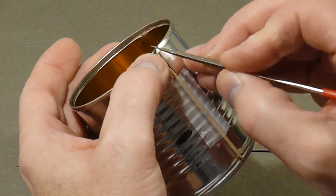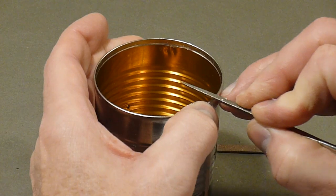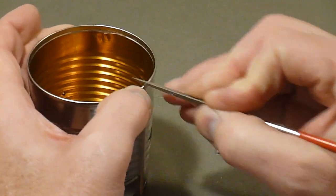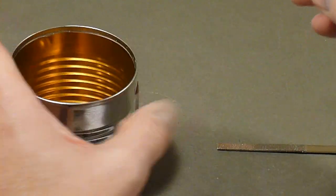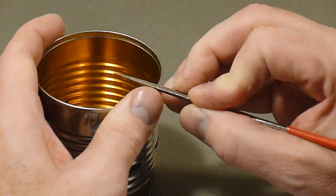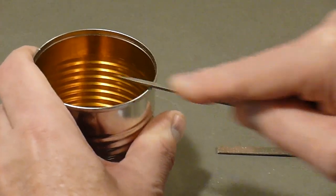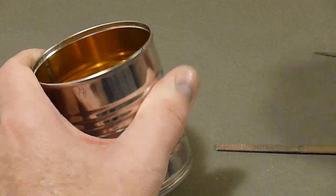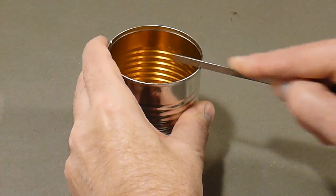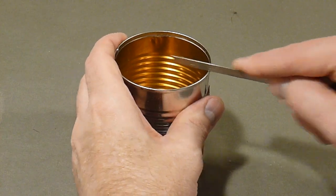Take a needle file or hacksaw blade and cut a couple notches in the can lip—one above the can seam and one where you marked it earlier. Make them about 1 millimeter deep. A square-shaped notch holds the fishing line better than a V-shaped notch.